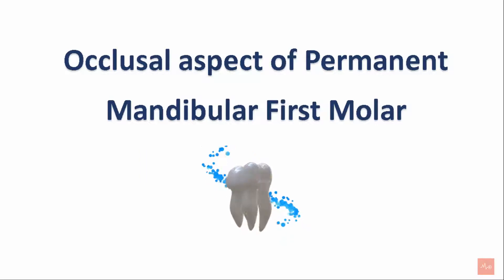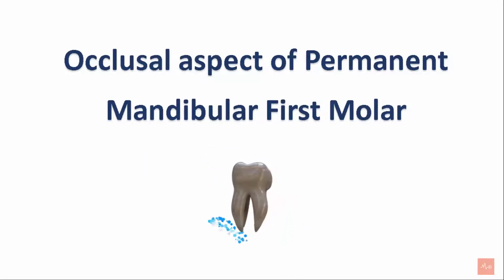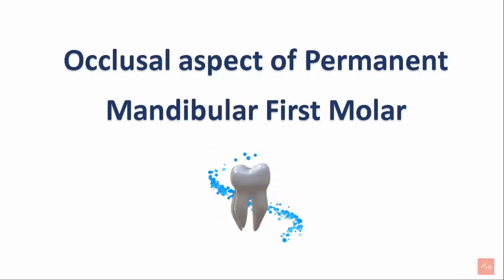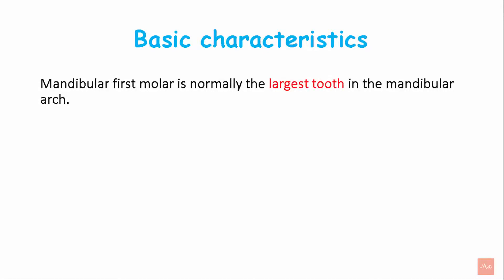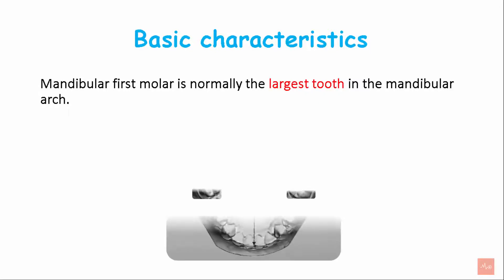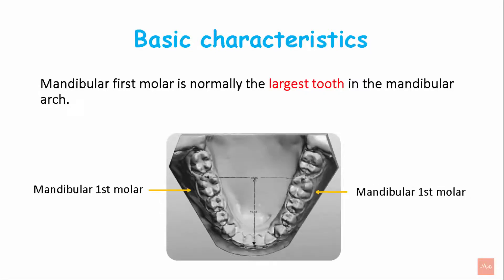Welcome back to MediClass. Today we cover the occlusal aspect of the permanent mandibular first molar. Let's see what the basic characteristics are. The mandibular first molar is normally the largest tooth in the mandibular arch.